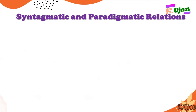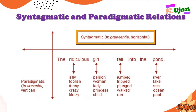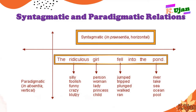Here is one more example. Syntagmatic — or we could say the horizontal study of elements of language — is like the sentence: 'The ridiculous girl fell into the pond.' This is the horizontal study, which is known as syntagmatic or sequential arrangement of words. But instead of 'ridiculous,' we could use 'silly,' 'foolish,' 'funny,' 'crazy.'